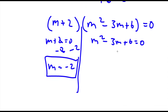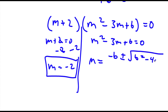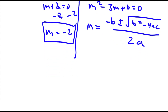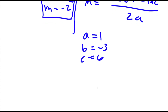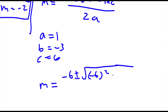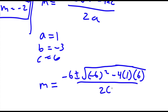For m squared minus 3m plus 6, we are going to use the quadratic formula, which is negative b plus or minus the square root of b squared minus 4ac, all over 2a. In this case, a is equal to 1, b is equal to negative 3, and c is equal to 6. So I have negative b plus or minus the square root of negative 3 squared minus 4 times 1 times 6, all over 2 times 1.